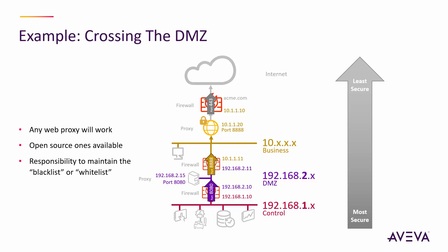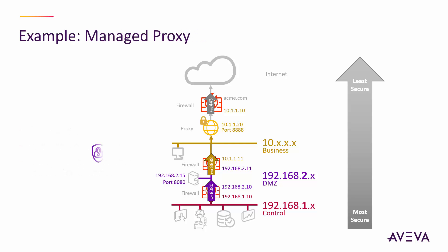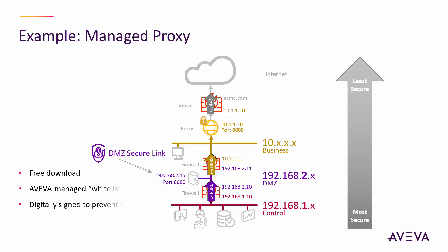The big challenge with using a proxy like this is that you have to take on the responsibility of managing the blacklist — all the sites that are blocked — or the whitelist — all the sites that are allowed — and keep it up to date. We thought it was important to provide a solution that really addresses those problems, and we call it DMZ SecureLink. This is a free download from Aviva Insight. Aviva takes on the responsibility of managing the whitelist, keeping it as narrow as possible to still support Aviva Insight. We block things like Windows updates, malware sites — basically anything not strictly required for Aviva Insight — and we digitally sign that whitelist to prevent tampering. We automatically update it as needed, so you just don't have to worry about it.